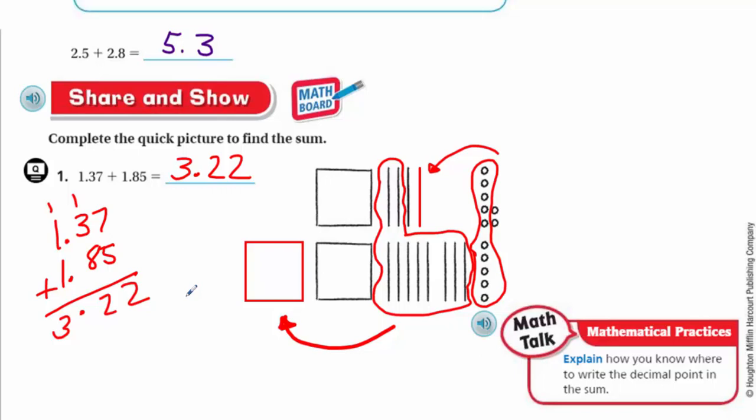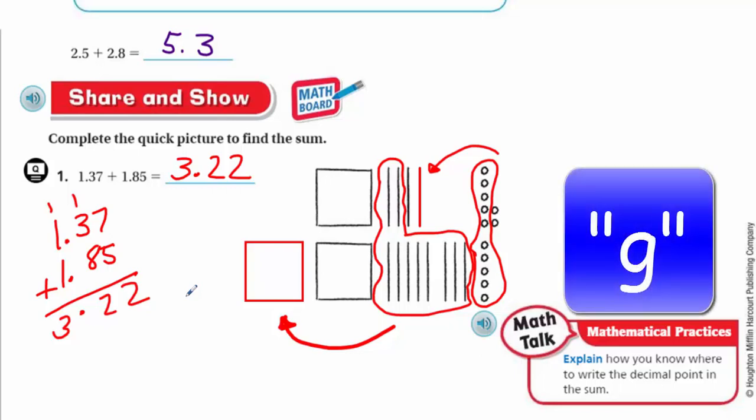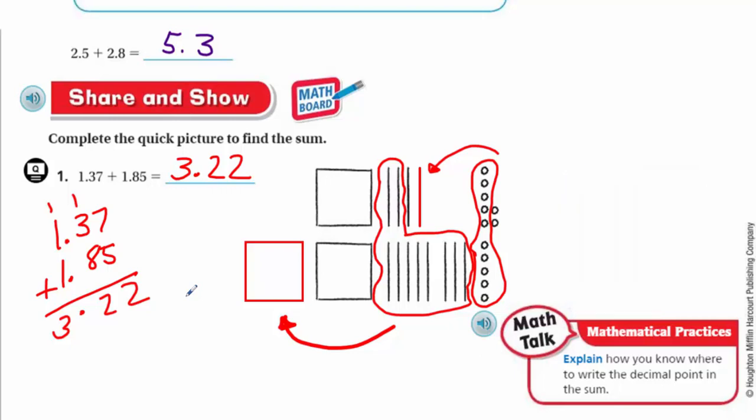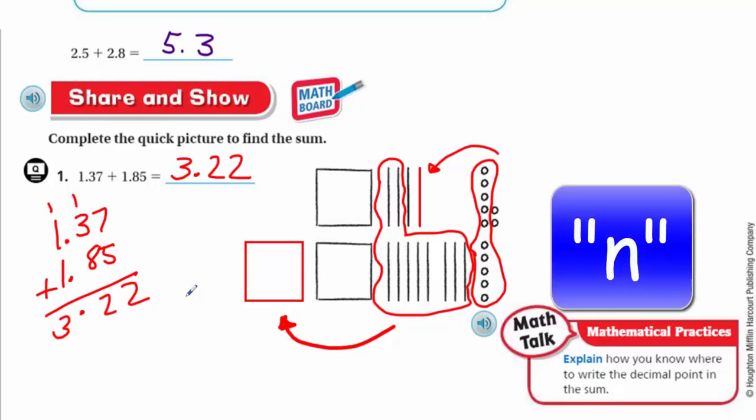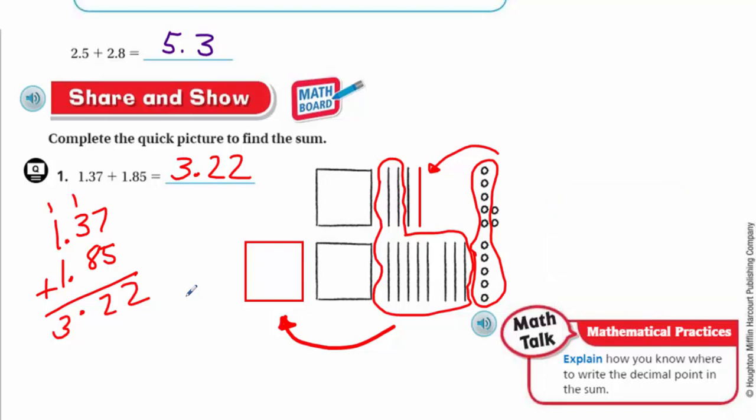It says explain how you know where to write the decimal point in the sum. The easy way is that you just memorize that the decimal goes between the ones place and the tenths place. However, you could expand your thinking and say it's the whole part and the fraction part, the decimal part. Anything that's a whole piece, everything's there, then we say that's a whole number. Anything less than that, you're going to end up into fraction and decimal territory.